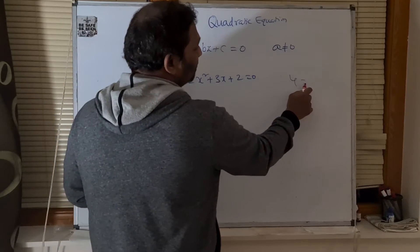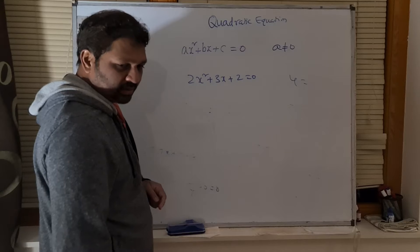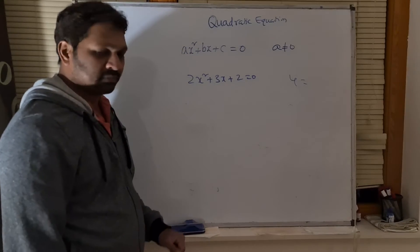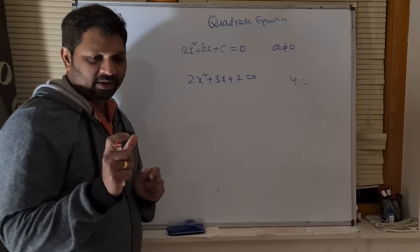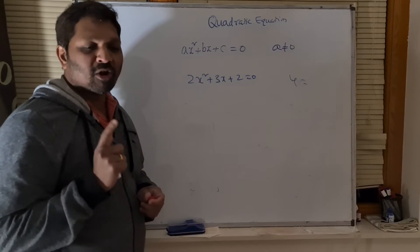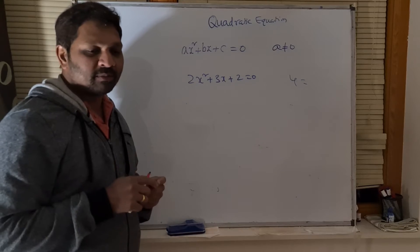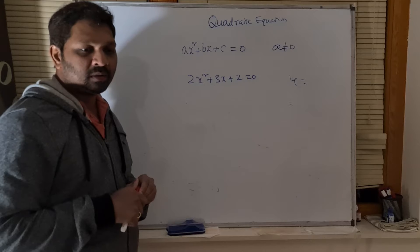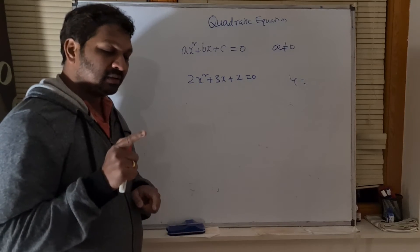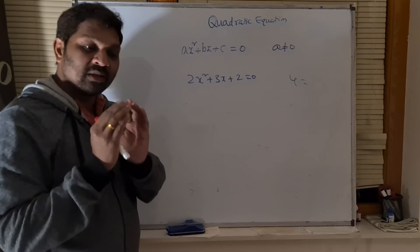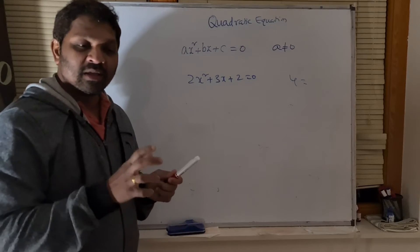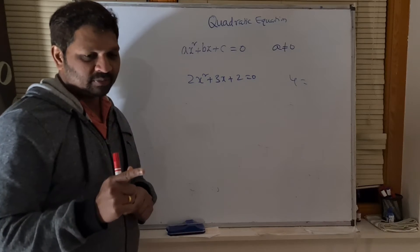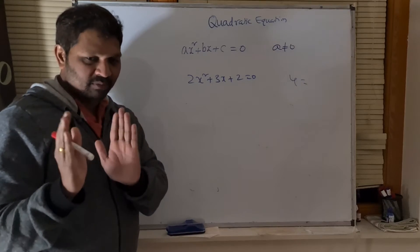In the factorization method, multiply A and C first, then figure out factor pairs of that product. Pick the pair that adds up to B. One drawback: if the factors are not natural numbers — for example 3.1 and 2.8 — it is difficult to predict them. At your exam level, equations are always given such that they have natural number factors.